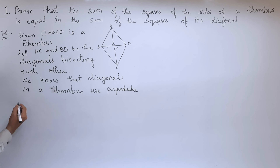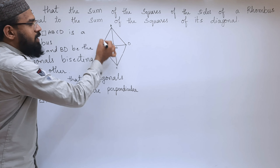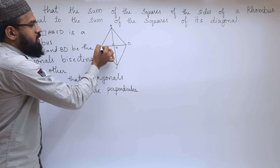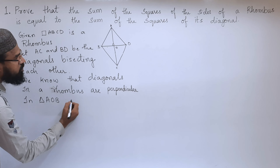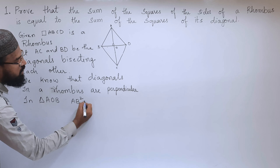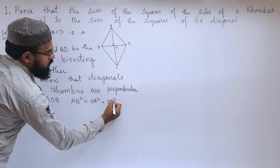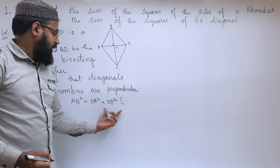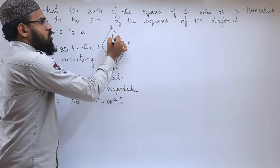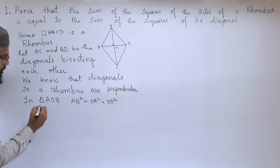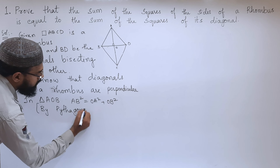Now, in triangle AOB, it is clear that AB is the hypotenuse — that is the longest side — and OA and OB are the other two sides. So, in triangle AOB, we can write: AB² = OA² + OB². We are able to write this because of Pythagoras theorem. According to Pythagoras theorem, hypotenuse squared equals opposite squared plus adjacent squared.